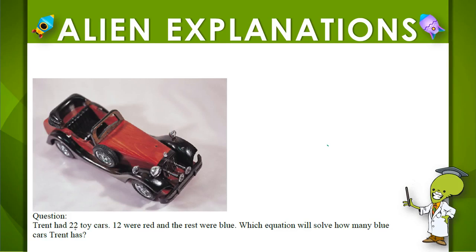In this problem we're told that Trent had 22 toy cars. 12 are red and the rest were blue. You're supposed to find the equation that will help you solve how many blue cars there were.